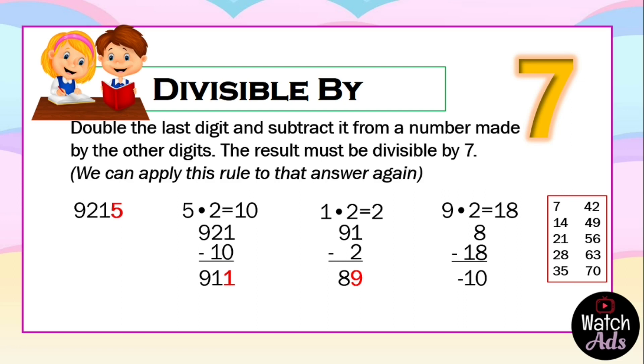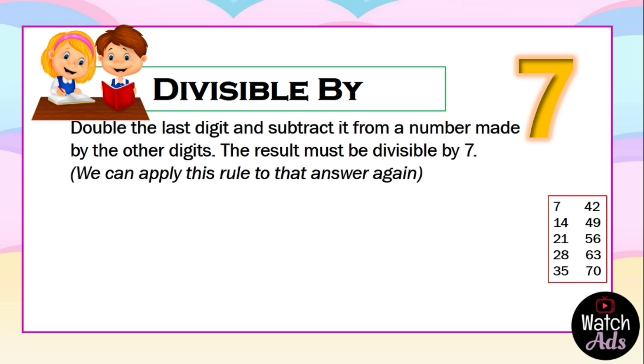Still, 10 is not divisible by 7, which means that 9215 is not divisible by 7. Another example.